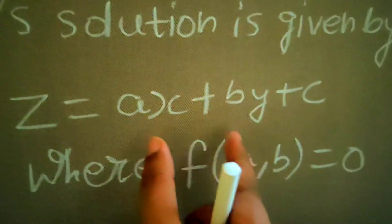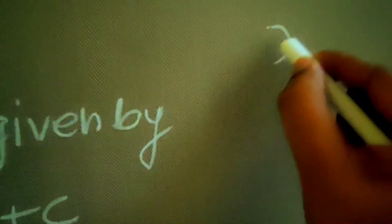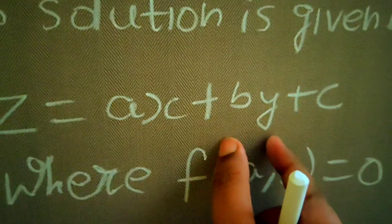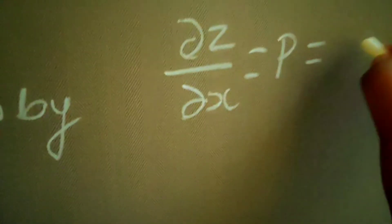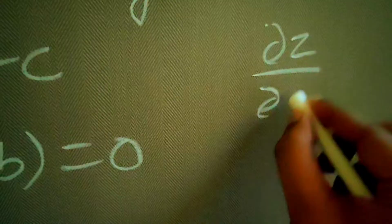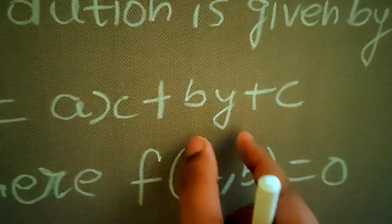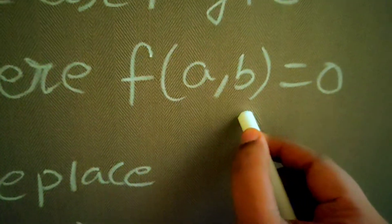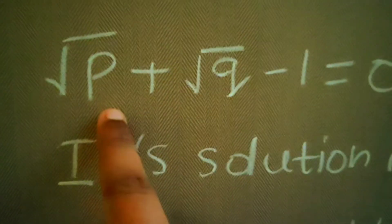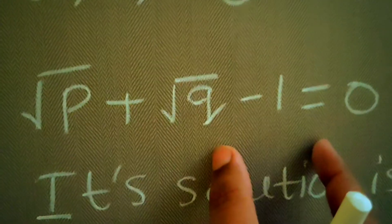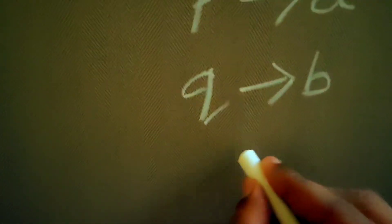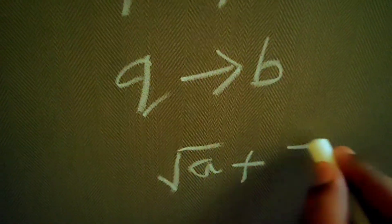How do we do this? Just replace p by a and q by b. The logic: if you look at z = ax + by + c and find del z by del x, which is p, you get a only, since the rest is constant. Similarly, del z by del y gives b. So to write the function of a and b, simply replace p by a and q by b. That gives: under root a plus under root b minus one equals zero.